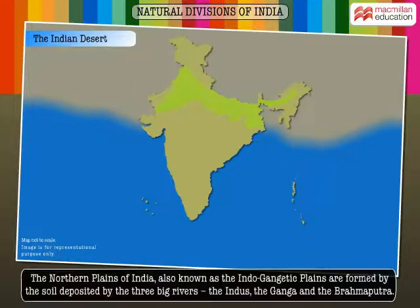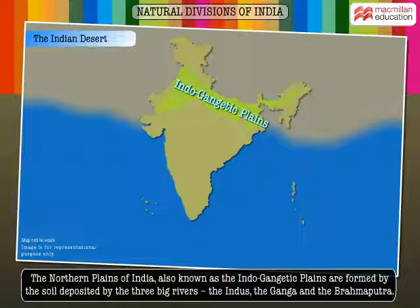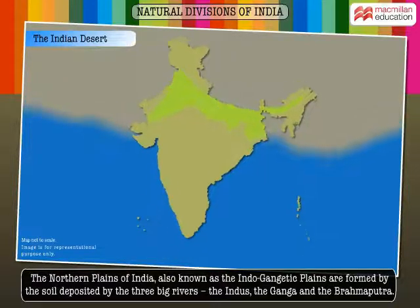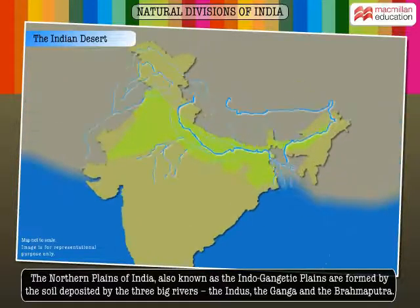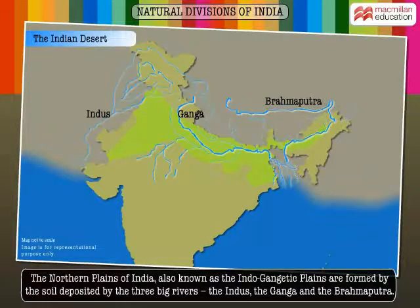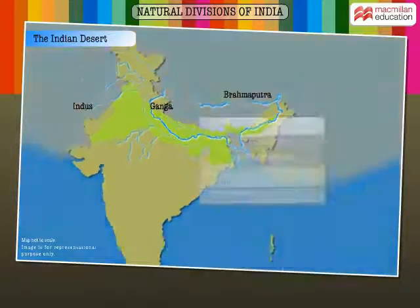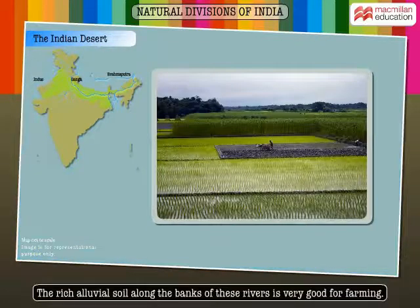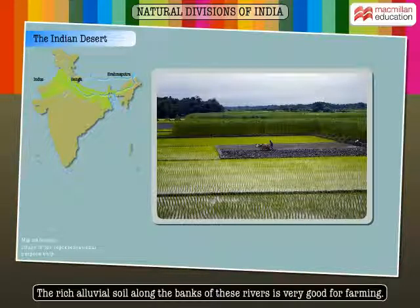The Northern Plains of India, also known as the Indo-Gangetic Plains, are formed by the soil deposited by the three big rivers — the Indus, the Ganga, and the Brahmaputra. The rich alluvial soil along the banks of these rivers is very good for farming.